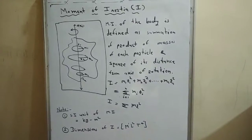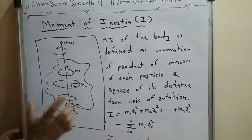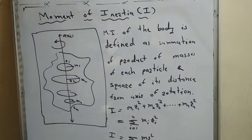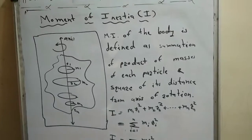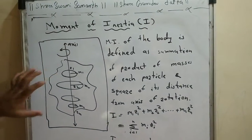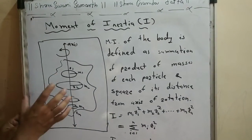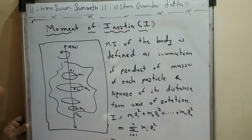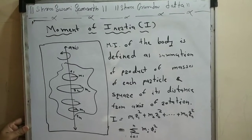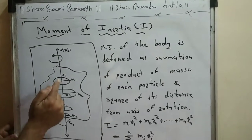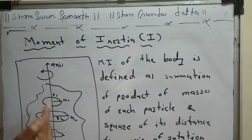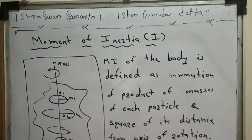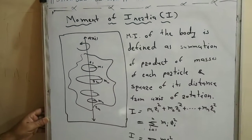To understand this, consider a rigid body. We have seen the concept of rigid body. This body is supposed to be rotating or spinning. Then, different particles of the body revolve along the circumference of different circles of different radii.